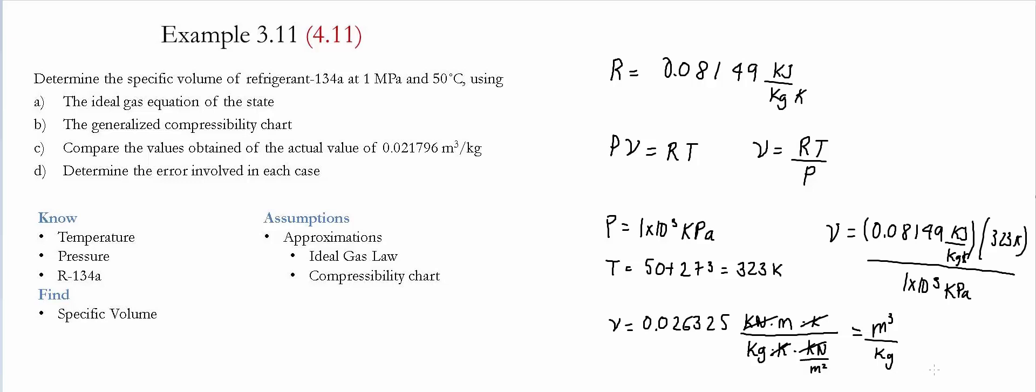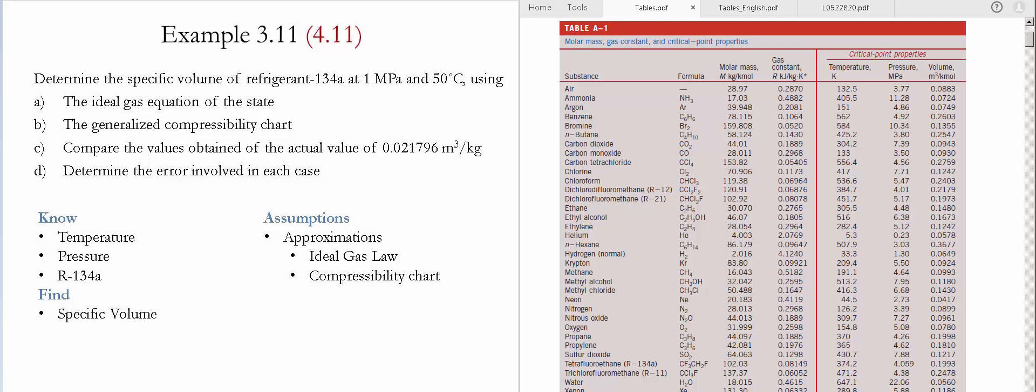So this is the value using ideal gas law. For part B, using the compressibility chart to find the specific volume, we go to table A1 to get the critical values of temperature, pressure, and volume.